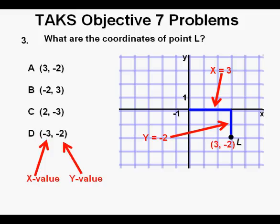And that means that the coordinates for point L are 3, negative 2. And those coordinates are found in answer A, which we circle as our correct answer.